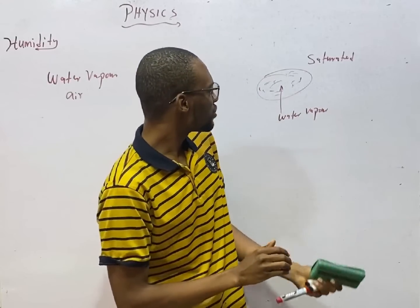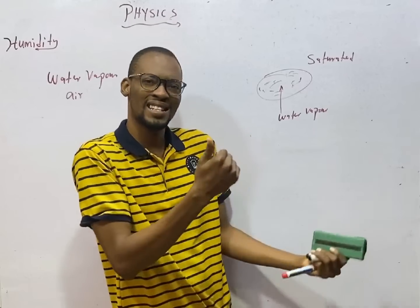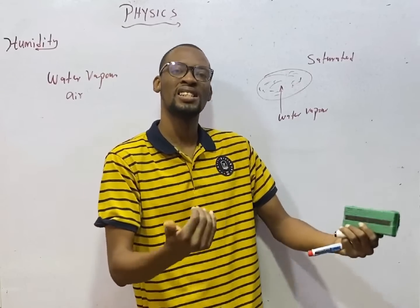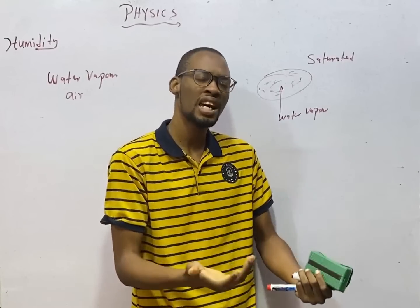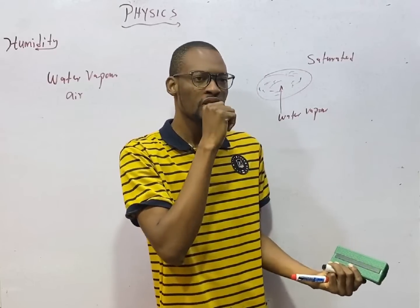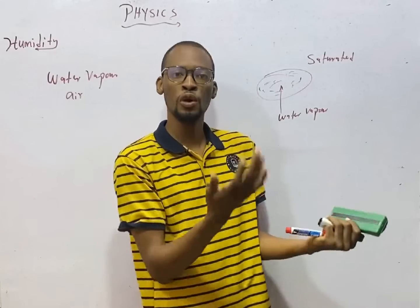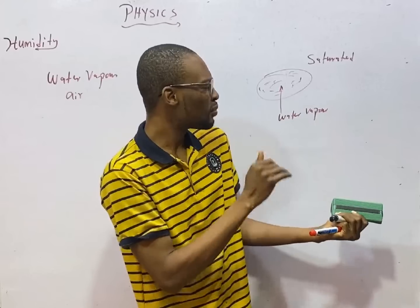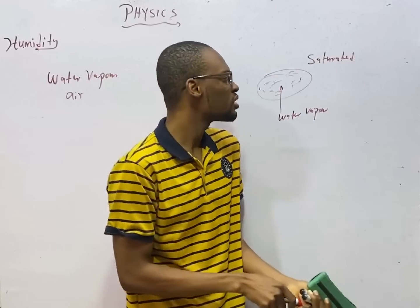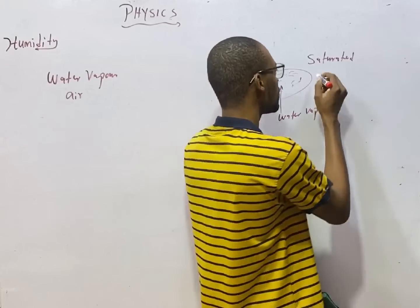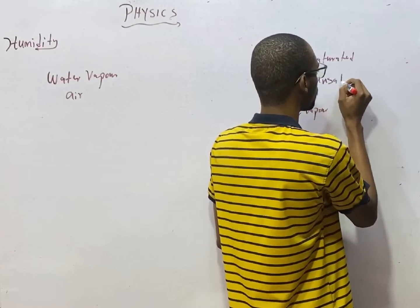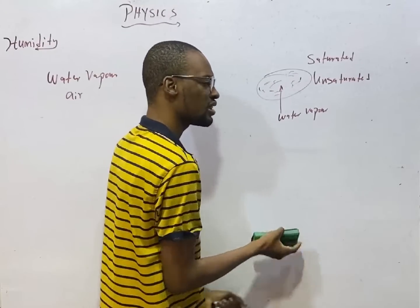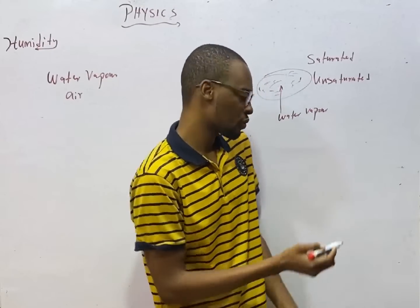If you give this air lesser water vapor than it actually needs, it therefore implies that it still needs more. You are giving it vapor lesser than the required amount. So it is unsaturated.